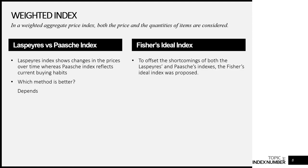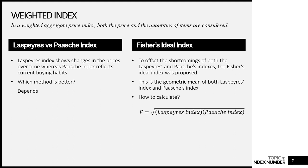Sometimes people want a middle ground, which is why we have the Fisher's ideal index. Fisher's index offsets the shortcomings of both Laspeyres and Paasche by taking the geometric mean of both. The formula: take the square root of (Laspeyres index × Paasche index). To find Fisher's ideal index, you must calculate the Laspeyres and Paasche indexes first. Please read the textbook for the advantages and disadvantages of all three methods.